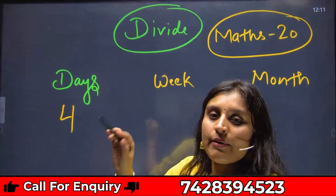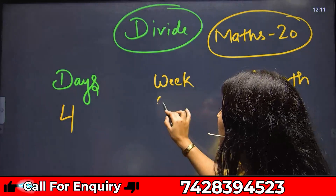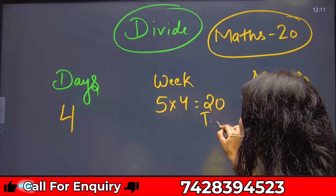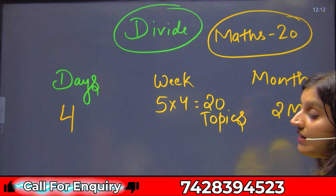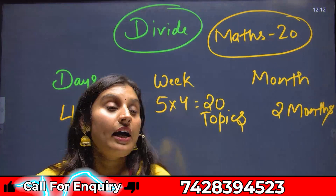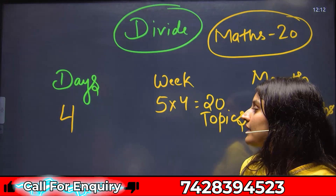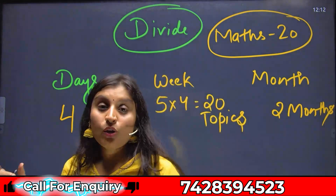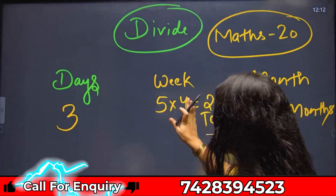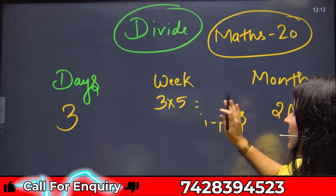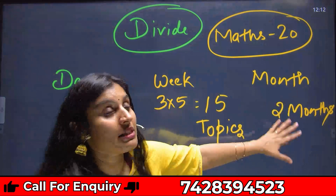Tick off 4 topics per day as you complete them. In a week, if you study 5 days, you can keep the remaining 2 days for revision and tests. So in 5 days you get 5 × 4 = 20 topics — your 20 topics are complete. And if you look at it monthly, completing the full syllabus won't take more than 2 months, which is exactly the time left before the exam.